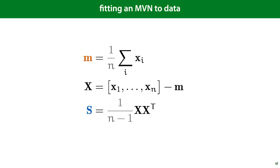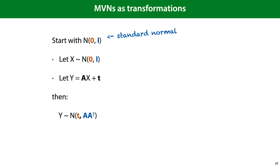A neat trick we're going to make a lot of use of is that we can define any multivariate normal distribution as a transformation of the standard normal distribution. If we have a linear transformation defined by a square matrix A and a translation vector T, and we sample a point x from a standard normal distribution and transform it — multiply by A and add T — then so long as the transformation is linear, the new point is also normally distributed, with mean T and covariance matrix A times A transposed. Any multivariate normal distribution can be described in this way given the right transformation.